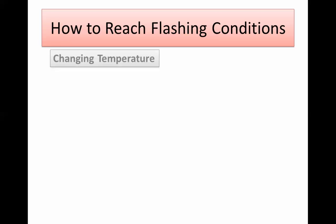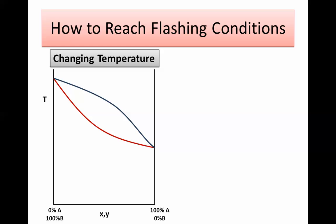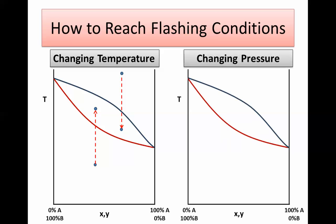How can you push your system to reach the flashing conditions? The first approach is by changing temperature, which is the more obvious thing. You have a liquid and you heat it until it reaches the wet region, or for vapor you cool it until it reaches somewhere in that region.